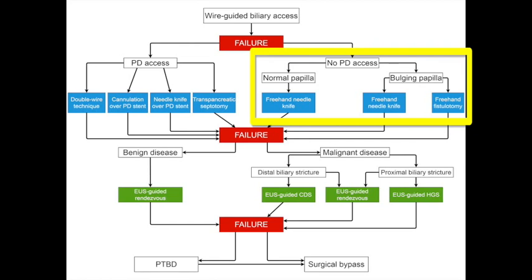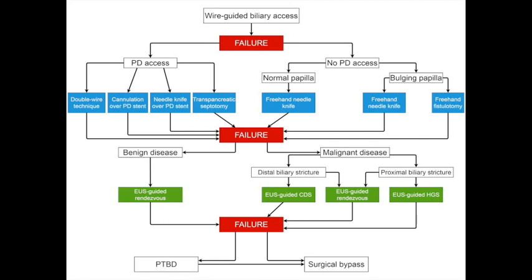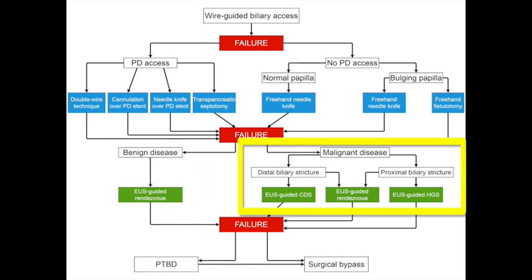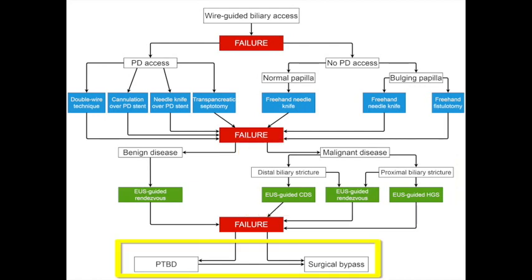If pancreatic duct access has not been achieved, the possible options are freehand needle knife sphincterotomy and fistulotomy, depending on the size of the major papilla. When all ERCP techniques have failed, the next steps involve the use of a linear echo endoscope to achieve biliary access. In patients with benign biliary disease, EUS-guided rendezvous technique is the next step. In patients with malignant disease, EUS-guided rendezvous or EUS-guided biliary drainage are the options. If all endoscopic techniques fail, consultation with IR for percutaneous transhepatic biliary drain placement or surgery consult for biliary bypass surgery is indicated.